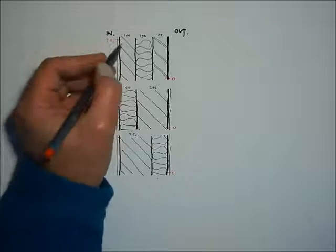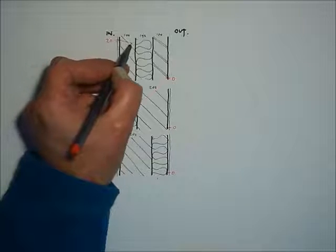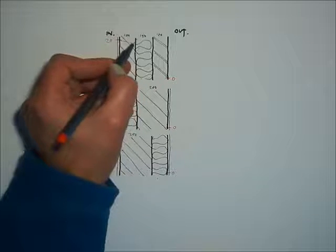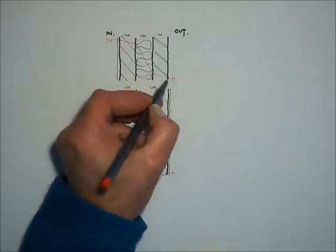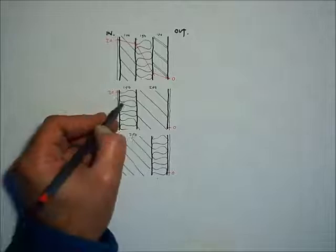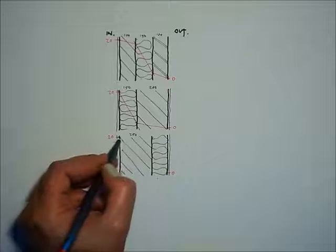And I'm going to draw a thermal gradient through the wall. So the gradient is shallow across masonry and steep across insulation. In each case steep across insulation, shallow across masonry.